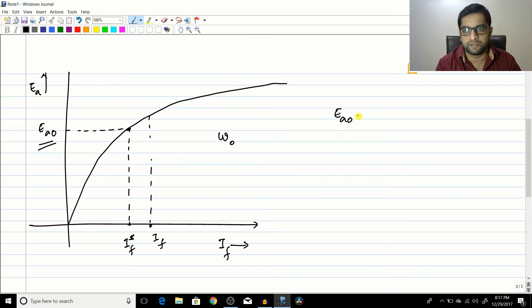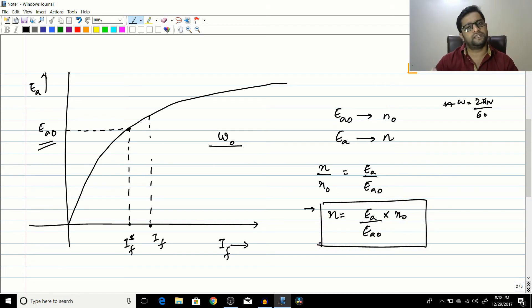So based on that, how can you find the new correct value of armature induced EMF or the correct value of speed depending upon the problem? So I can tell that Ea0 corresponds to say n0. And you know that omega is equal to 2 pi n by 60. So I can use this relation directly. Ea0 by Ea will correspond to n0 by n.